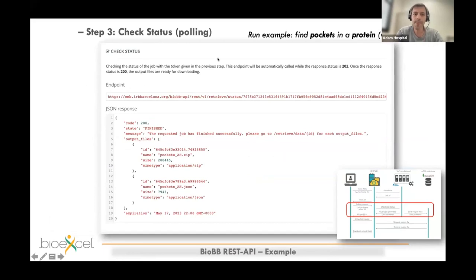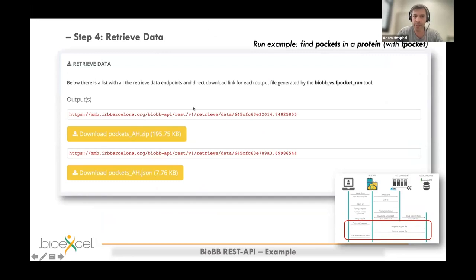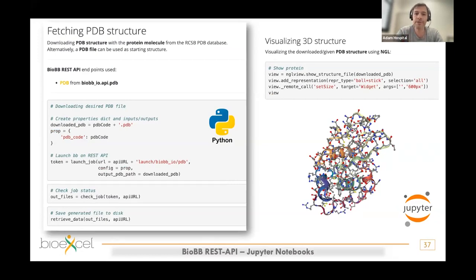The website does the polling for you, checking the job status and giving you information like 'still waiting, the job is running in the virtual machines.' When the job is finished, it receives the IDs of the different output files, tells you the state is finished, and automatically generates the endpoints to retrieve the output files. All of this can be done through the REST API website. This is the final part of the process — retrieving the output files from the database.